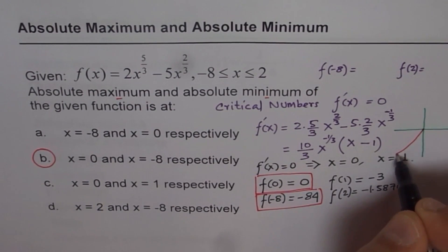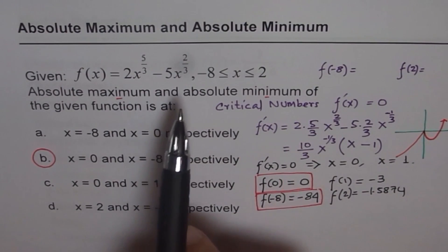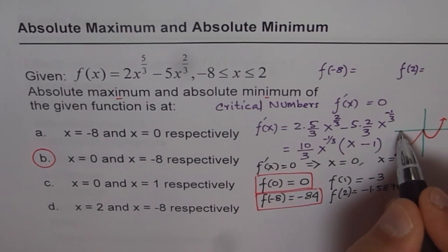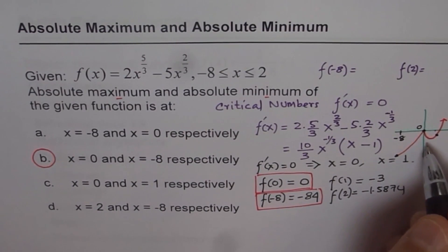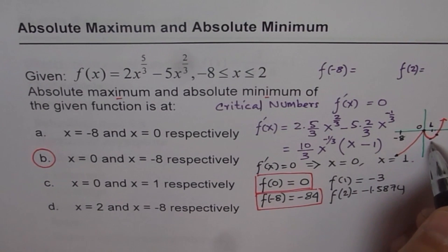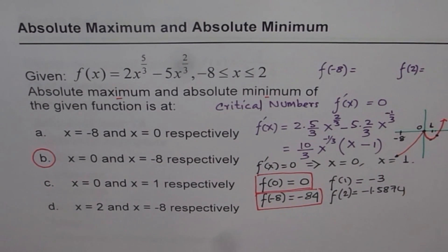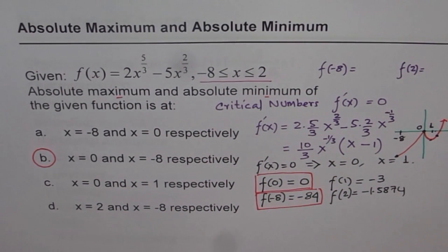Looking at a rough sketch of the function: there is a local maximum around x = 0, and the function extends from x = minus 8 on the left to x = 2 on the right. The point at x = 1 is a local feature but not the absolute minimum — the absolute minimum is at x = minus 8. This shows how to find absolute maximum and minimum with boundary conditions: check both the boundary values and the critical numbers.